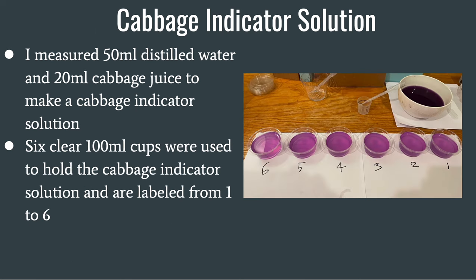For my cabbage indicator solution, I measured 50 ml of distilled water and 20 ml of cabbage juice to make a cabbage indicator solution. I then used six clear 100 ml cups to hold the cabbage indicator solution, labeled from 1 to 6 as shown in the photo to the right.